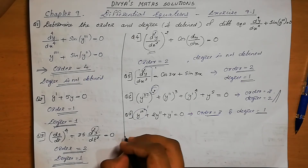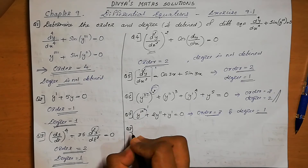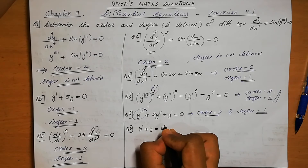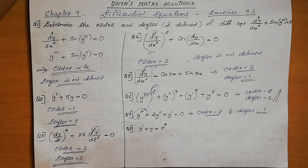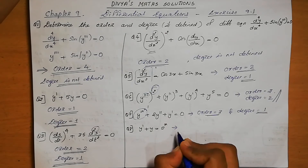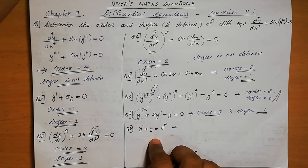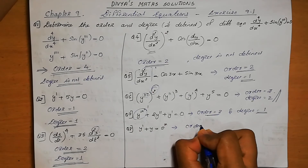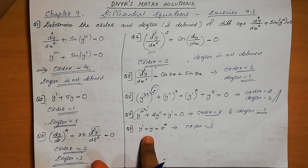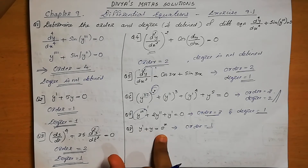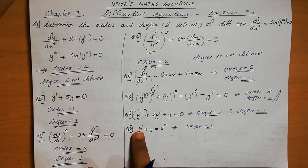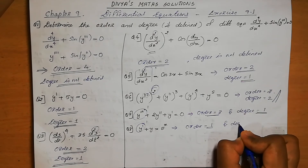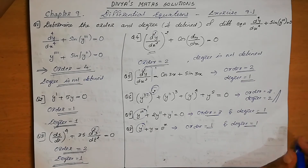Question number 8: y' + y = eˣ. The highest order derivative is y' (order 1), so the order is 1. This is in the form of a polynomial equation. The power of y' is 1, so the degree equals 1.